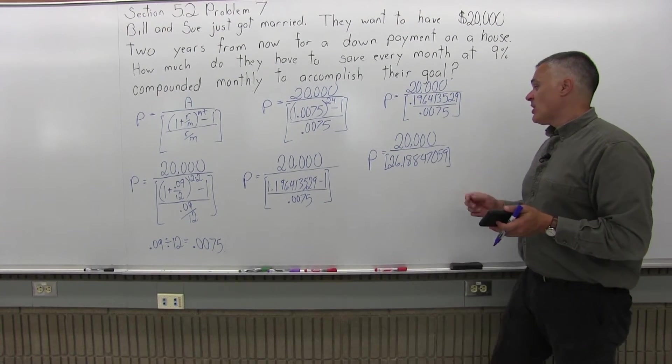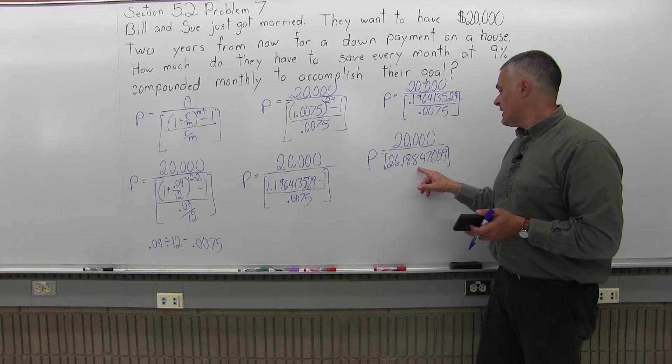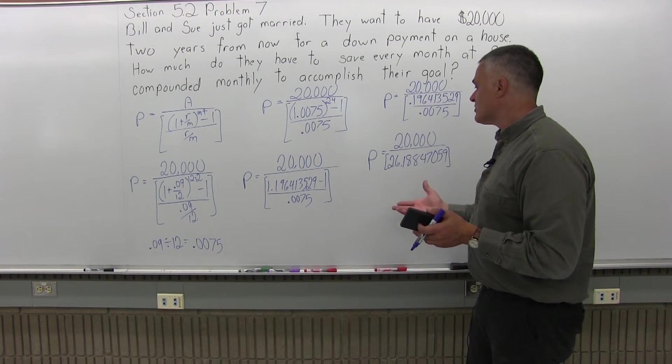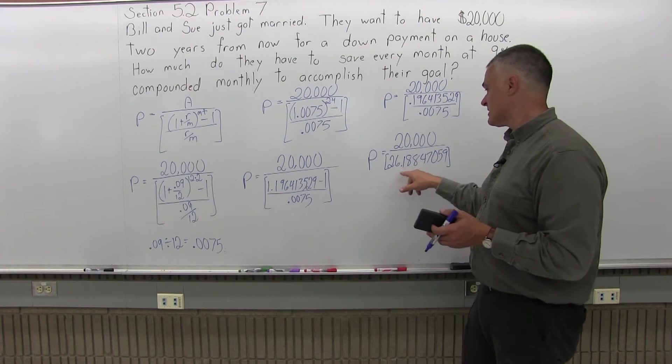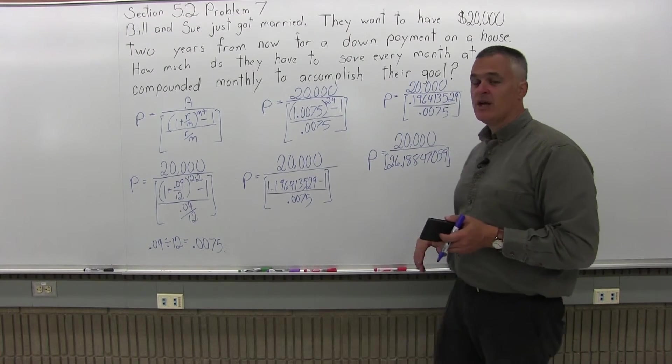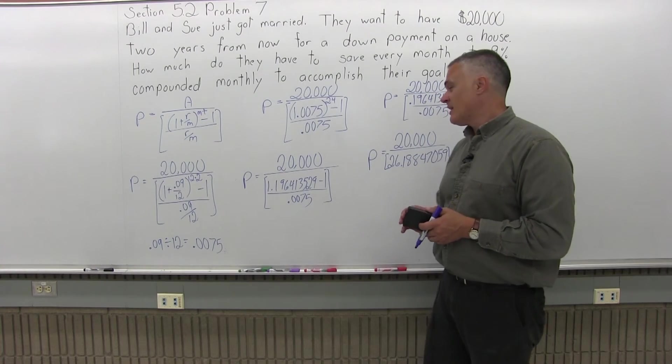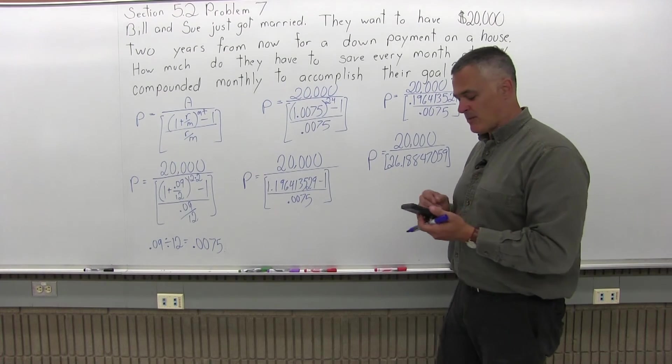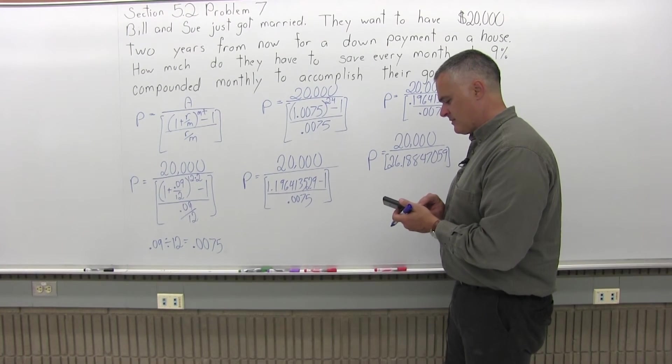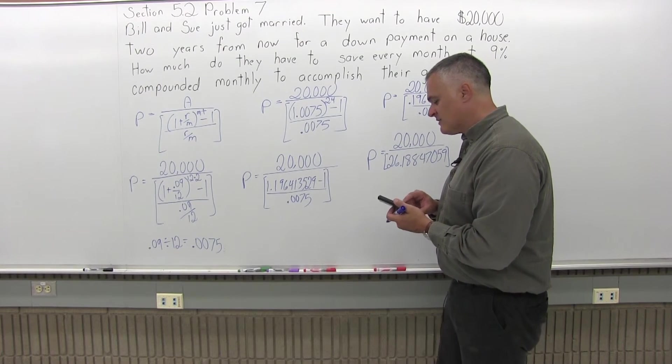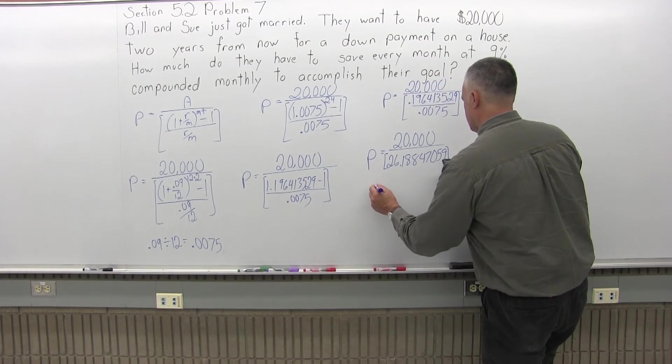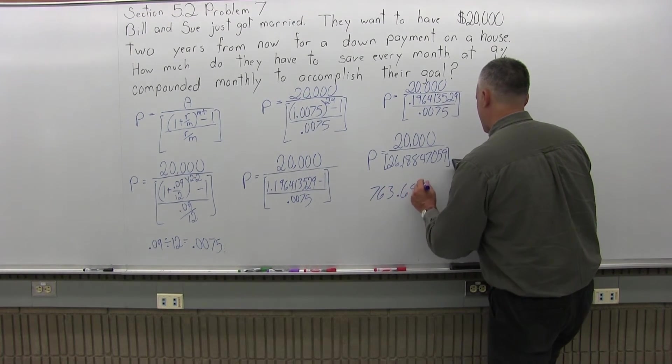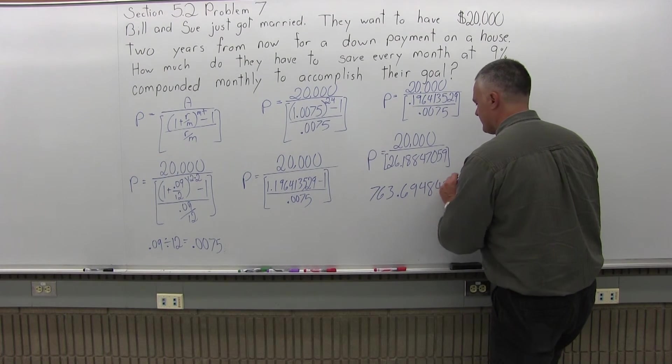So to finish the problem off, I'm going to do 20,000 divided by 26.18847059. And again, the most straightforward way is just to clear the screen of the calculator and enter 20,000 divided by 26.18847059. That's on the screen of the calculator now. I hate to clear it and then re-enter it. So save it in memory first, I say, and do 20,000 divided by recall memory. And that gives me a final answer of 763.6948456.